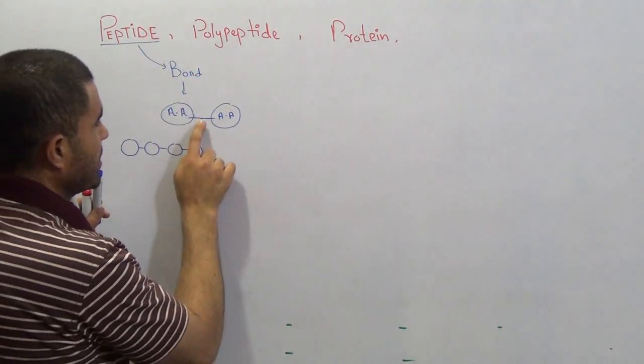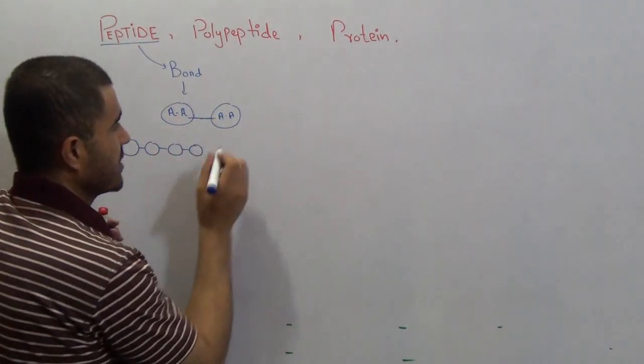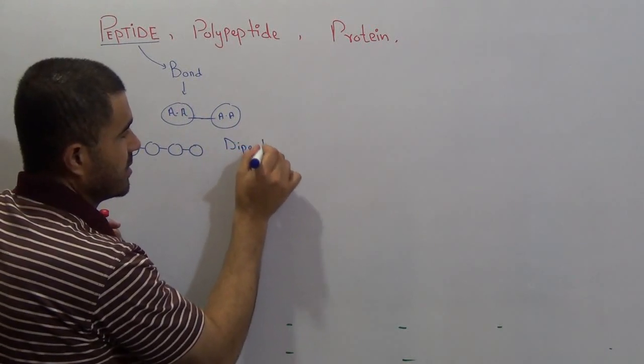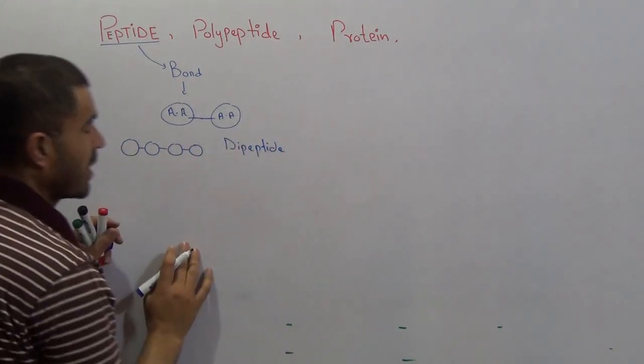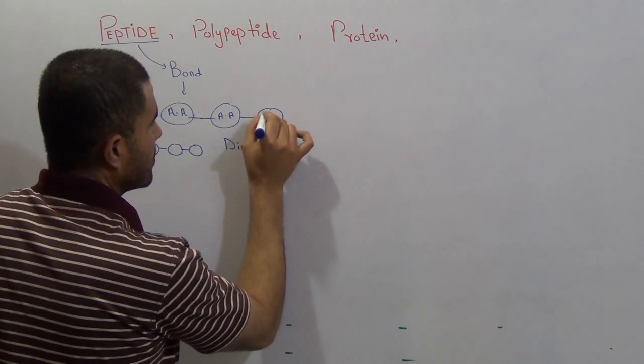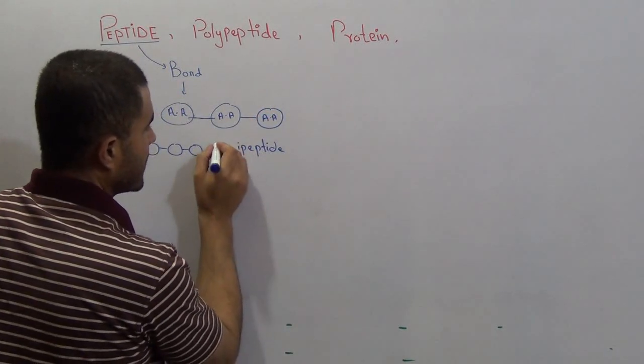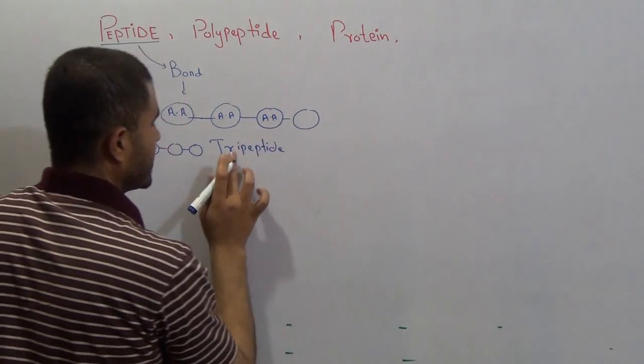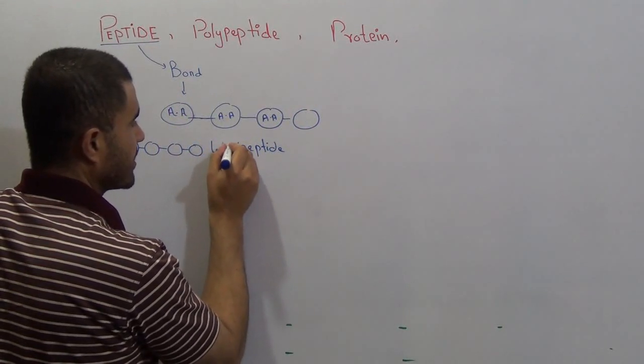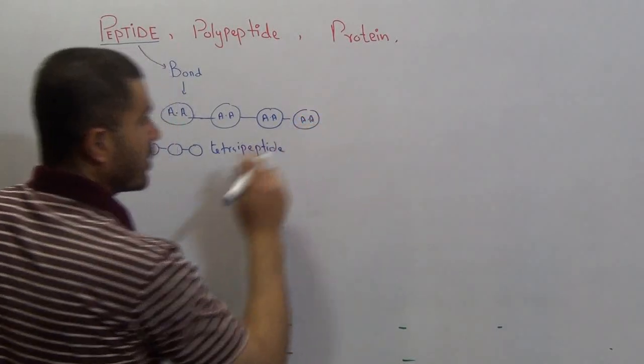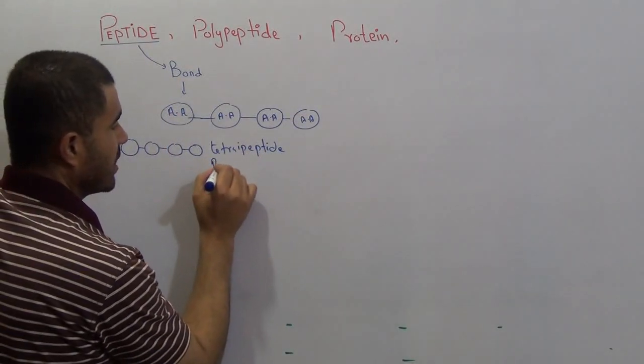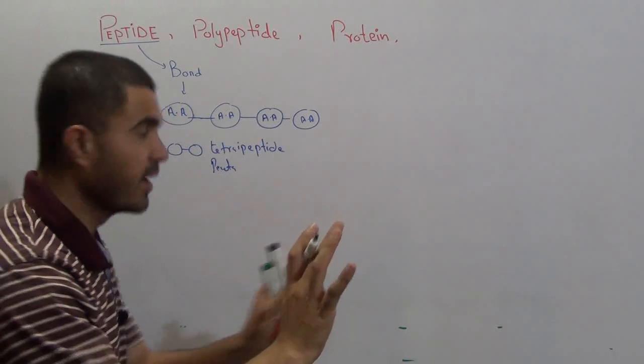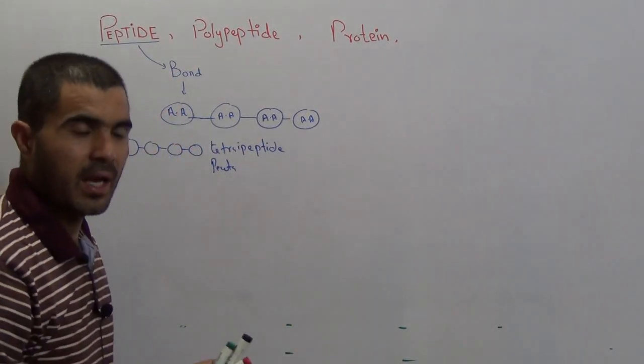This is a very general word. Peptide - usually we use the word peptide along with bond. Peptide bond means when there is one bond between the two amino acids we call it dipeptide. And when a third amino acid is attached we call it tripeptide. And when a fourth amino acid is attached we call it tetrapeptide.